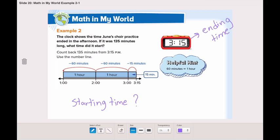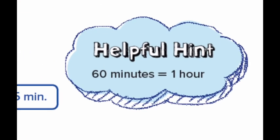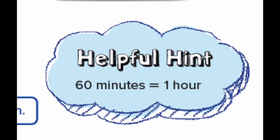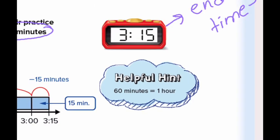We know that the practice was for how long? 135 minutes. Now, we're not going to add. We need to subtract. We need to count back 135 minutes from 3:15 PM using the number line. Before we do that, let's take a look at this helpful hint. It says that 60 minutes is 1 hour. That's a very important hint. 60 minutes is 1 hour.